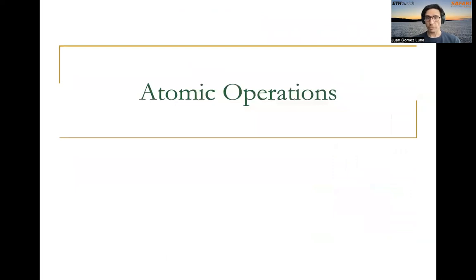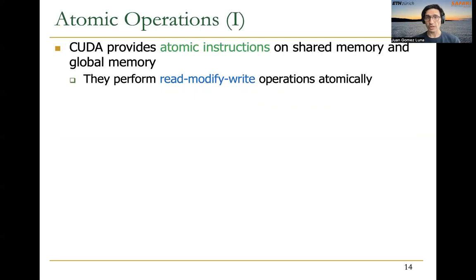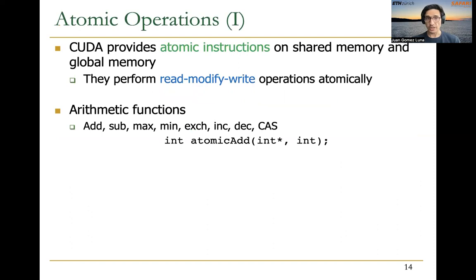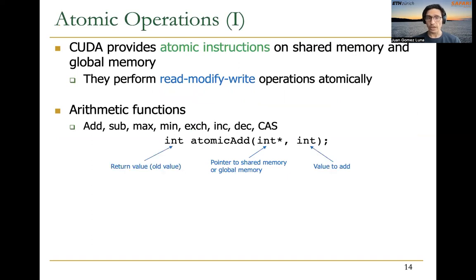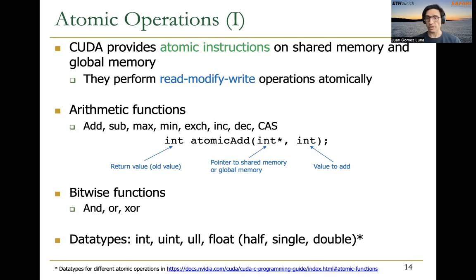We also talked about atomic operations as a way of implementing reduction or at least the final reduction. Atomic operations are very useful because they perform read, modify, write operations atomically, and they can be applied to shared memory or global memory locations. There are arithmetic functions like add and sub — here you can see the syntax of an atomic add, where this is the pointer to shared or global memory, this is the value to add, and it will return the old value. There are also bitwise functions like and, or, and XOR, and different data types. You can check all the details in the CUDA programming guide.